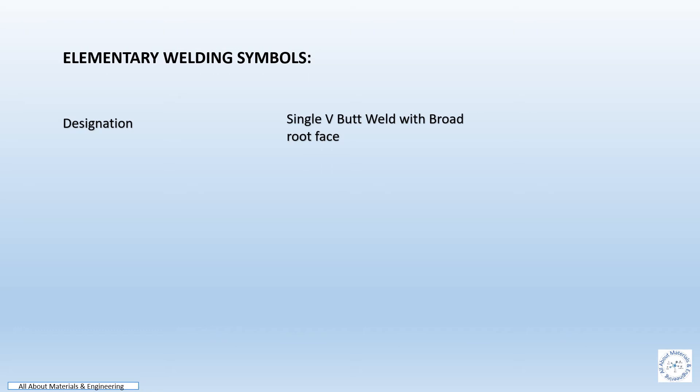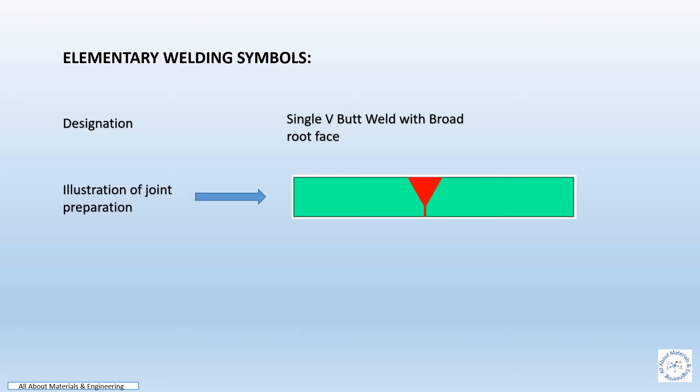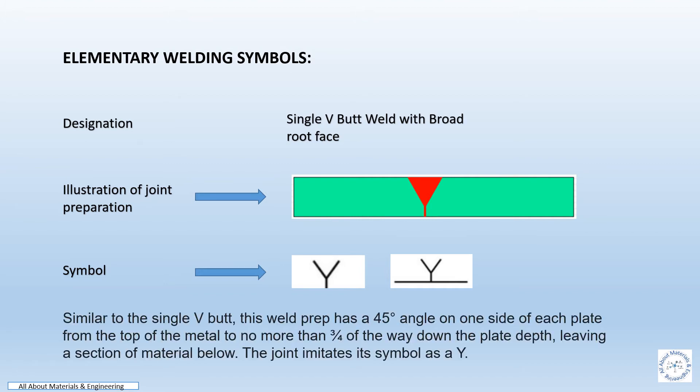Elementary welding symbol for single V butt weld with broad root face. The illustration of joint preparation is as per the sketch, and the symbol will be as per the given sketch. Similar to the single V butt, this weld preparation has a 45 degree angle on one side of the plate from the top of the material to not more than three-quarters of the way down the plate depth, leaving a section of material below the joint. The symbol resembles a Y.